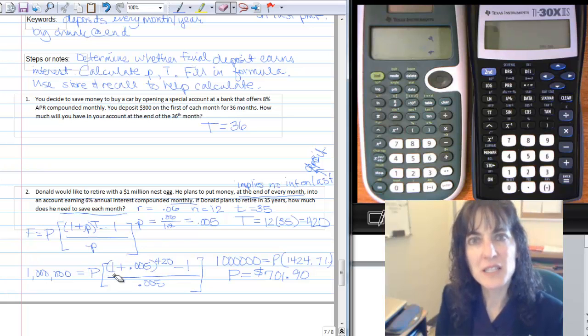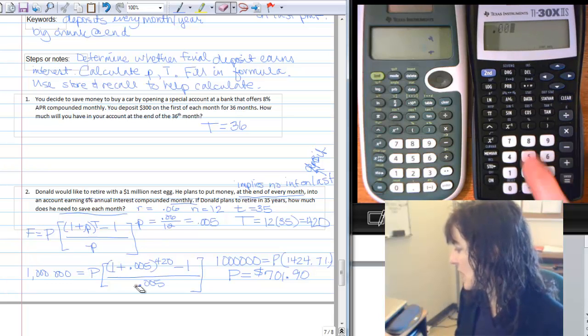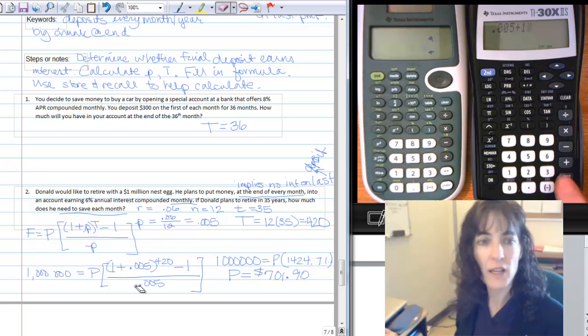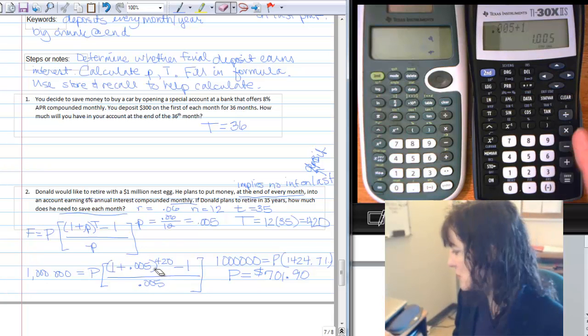So I'm starting again inside these little parentheses. I have 0.005 plus one. So I have 0.005 plus one equals and I get 1.005 to the 420th.